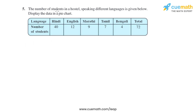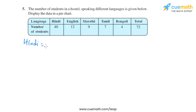Question 5 of this exercise says the number of students in a hostel speaking different languages is given below. We have to display the data in a pie chart, so we need to find the central angle of each language. The central angle formula is: value of the observation divided by the total value, multiplied by 360 degrees.